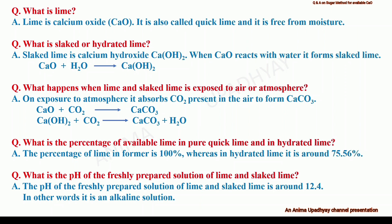With the help of reactions, I have tried to show you how these reactions take place. What is the percentage of available lime in pure quick lime and in hydrated lime? In pure quick lime, the percentage of lime is 100%, whereas in hydrated lime, it is around 75.56%. What is the pH of the freshly prepared solution of lime and slaked lime? It is around 12.4. So in other words, we can say that the solutions of lime and slaked lime are alkaline.